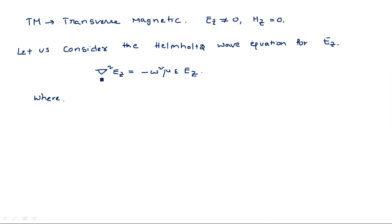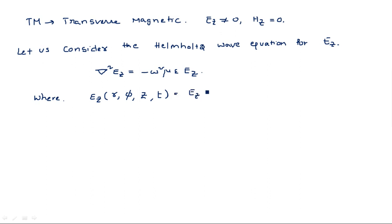Unlike the rectangular waveguide where del² is written in x, y, z, here it must be written in terms of r, φ, and z. Here r is the radius of the circular waveguide, φ is the angle at which the wave is propagated, and z is the direction of propagation. Ez can be written as Ez(r, φ) · e^(jωt − γz).